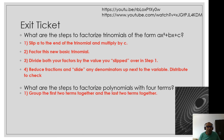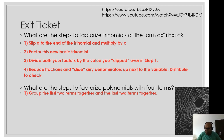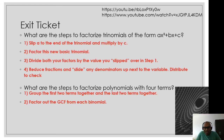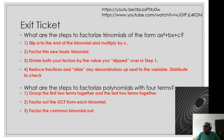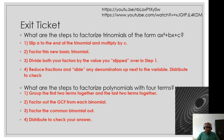And for factorizing polynomials with four terms using grouping: Step 1 — group the first two terms and the last two terms together; sometimes you need to rearrange. Step 2 — factor out the GCF from each binomial. Step 3 — factor the common binomial out. Step 4 — distribute to check your answer. Remember, guys — this is your learning goal!